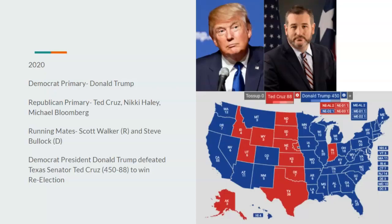In 2020, Donald Trump is essentially unopposed in the Democrat primary. In the Republican primary, Ted Cruz, Nikki Haley, and Michael Bloomberg run — but Bloomberg is quickly eliminated over his stop-and-frisk controversy. Ted Cruz and Nikki Haley are neck and neck until Super Tuesday, where Cruz dominates with California and Texas. He's nominated, believing he can win the South, and chooses Scott Walker as his running mate, having noticed the Rust Belt trending Republican. Democrat President Donald Trump defeats Texas Senator Ted Cruz 450 to 88 to win re-election in a massive landslide, winning by about 13 percentage points.